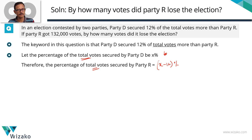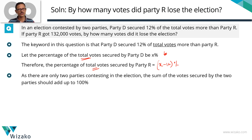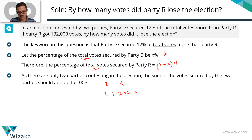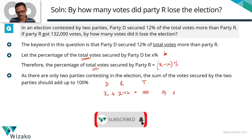Since there are only two parties, the total votes polled by both parties equals 100%. So we frame the equation: x + (x − 12) = 100. Taking 12 to the right-hand side gives us 2x = 112, so x = 56. Party D therefore got 56% of the total votes.